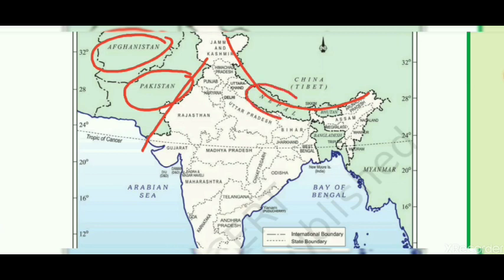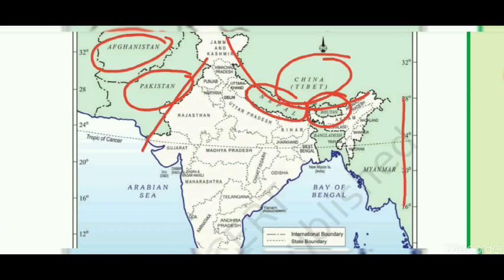In the northern part of India, we have three neighboring countries: the first one is Nepal, the second one is Bhutan, and the third one is China, in which Tibet also comes — Tibet has been occupied by China. On the eastern side, we have two neighboring countries: Myanmar and Bangladesh.